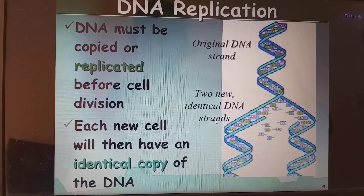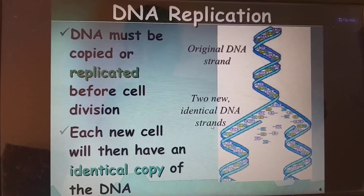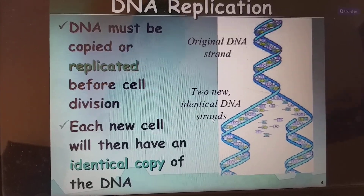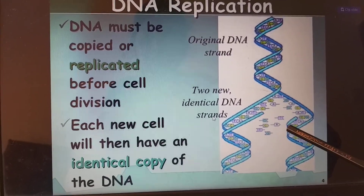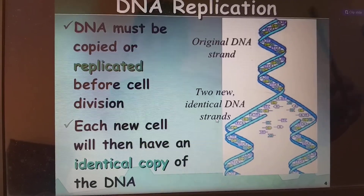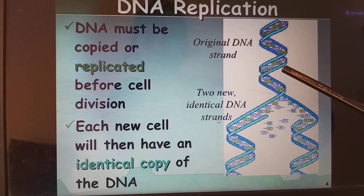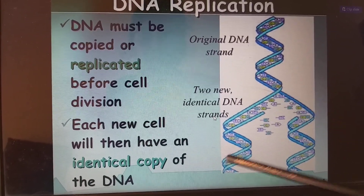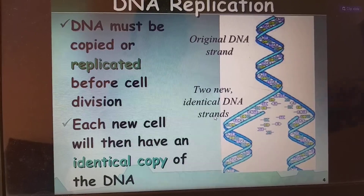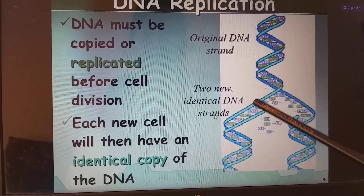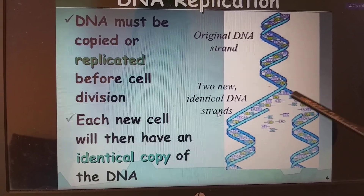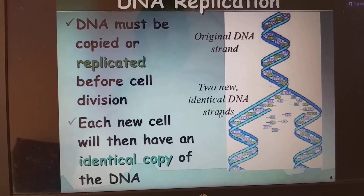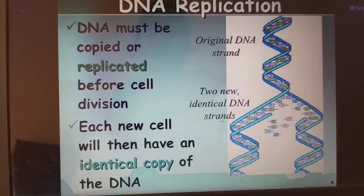Each new cell will then have an identical copy of the DNA. This happens in mitosis. Through the semi-conservative method, new strands of DNA are formed for the daughter cells. From one parent cell, we get two daughter cells, each sharing an equal and identical copy of the DNA. For more detail about DNA replication, please check my previous videos.